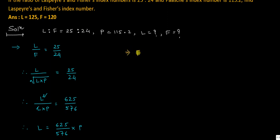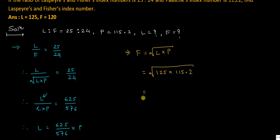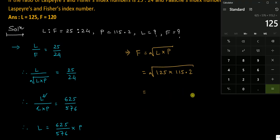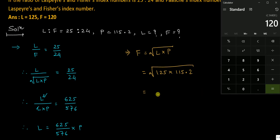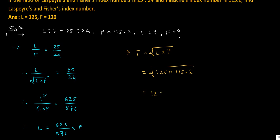Now after getting Laspeyres and Paasche we can easily find Fischer's index number. F equals under root of L into P, which equals under root of 125 into 115.2. That equals 14400, and the under root is 120. So Fischer's index number is equal to 120.